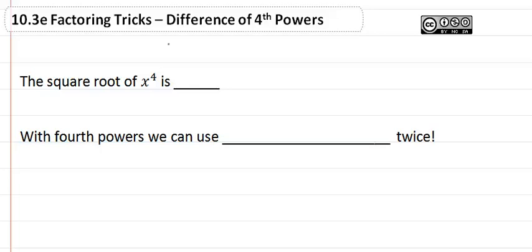10.3e Factoring Tricks, the Difference of Fourth Powers. The square root of x to the fourth is x squared, and with fourth powers we can use the difference of squares twice.